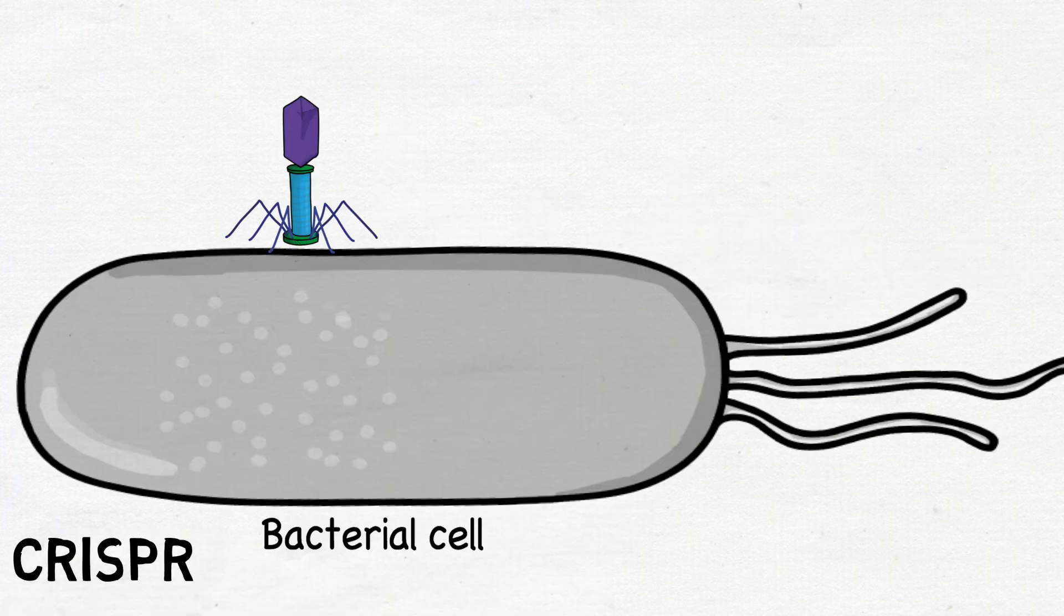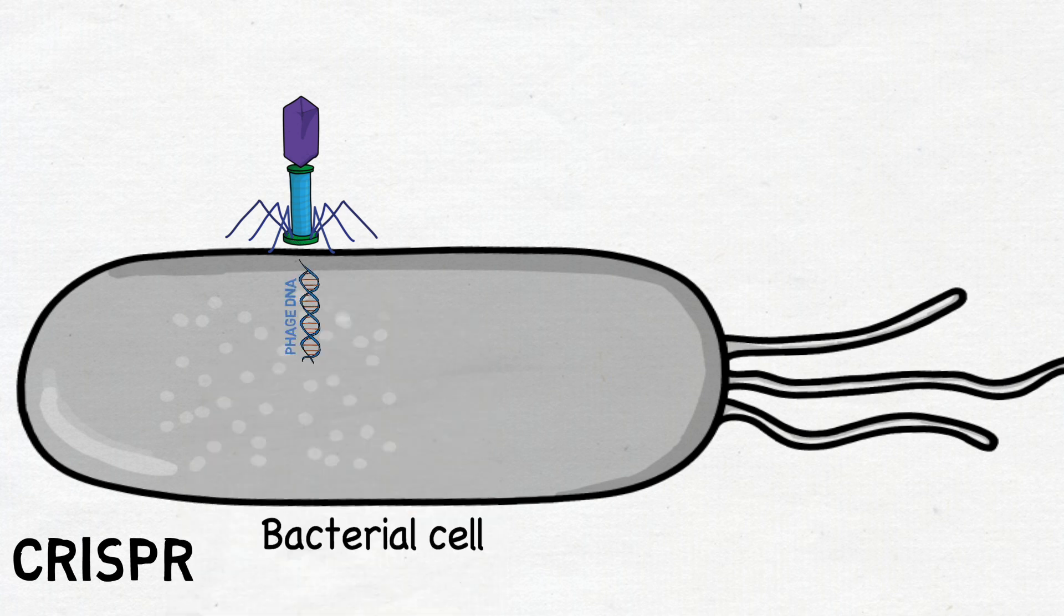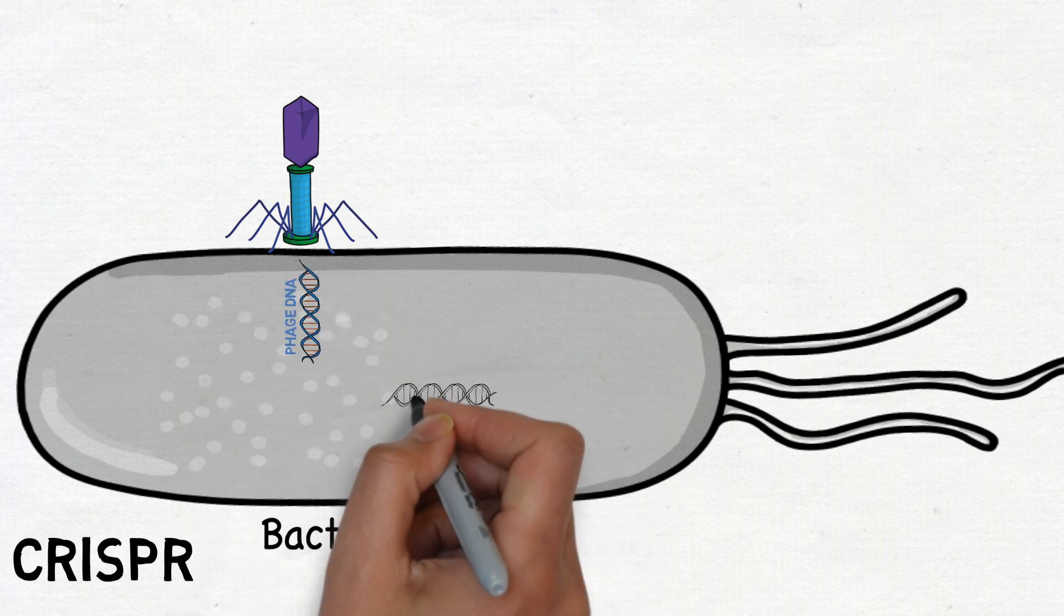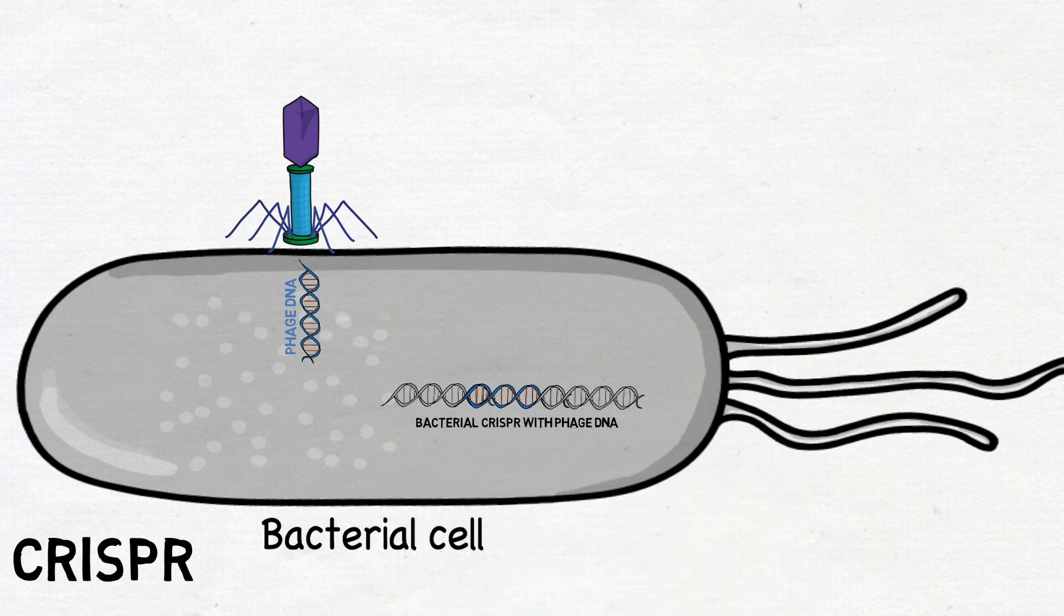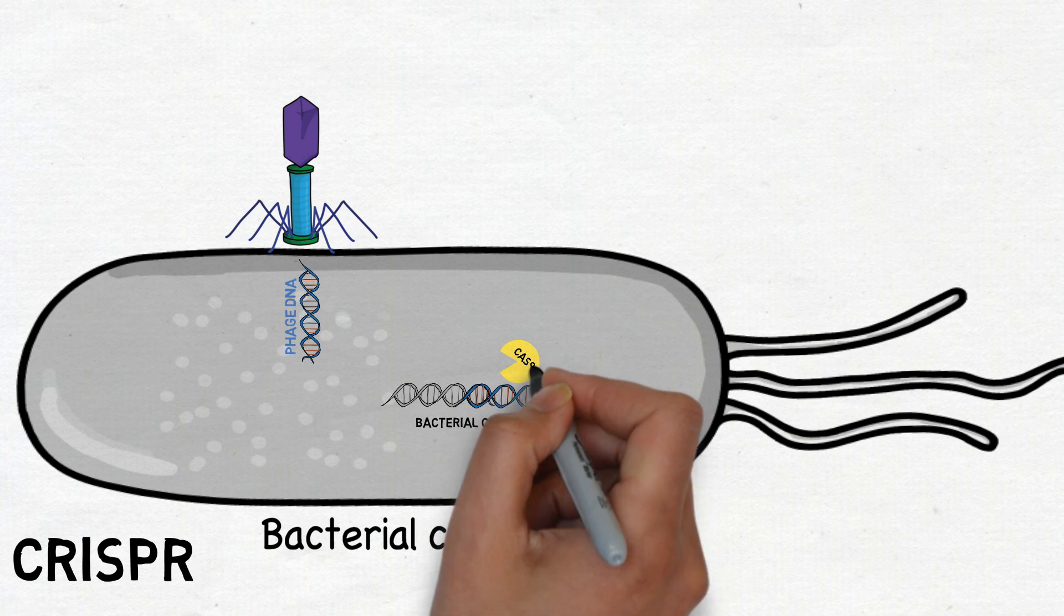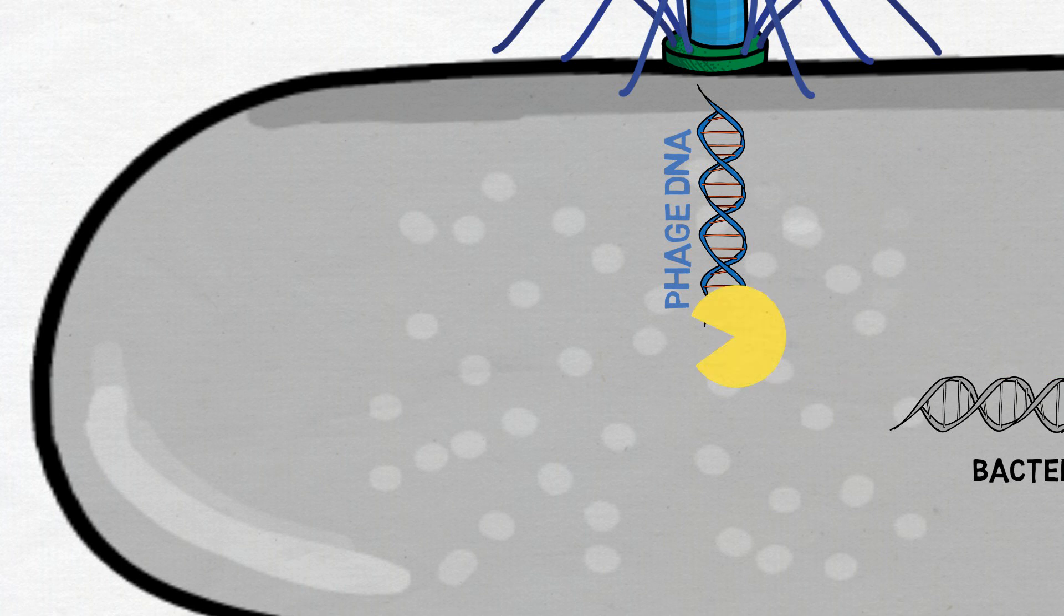One important bacterial defense system is provided by CRISPR. CRISPR uses phage DNA sequences stored in a sort of genetic library to recognize phages when they attack. Copies of the DNA fragments stored in this library form complexes with the Cas9 nuclease protein. These complexes patrol the cell and destroy invading phages.